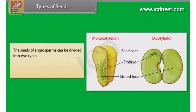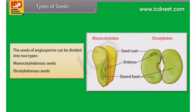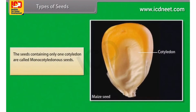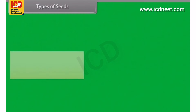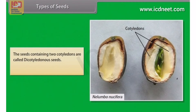The seeds of angiosperms can be divided into two types: monocotyledonous seeds and dicotyledonous seeds. The seeds containing only one cotyledon are called monocotyledonous seeds — example, maize. The seeds containing two cotyledons are called dicotyledonous seeds — example, Nelumbo nucifera.